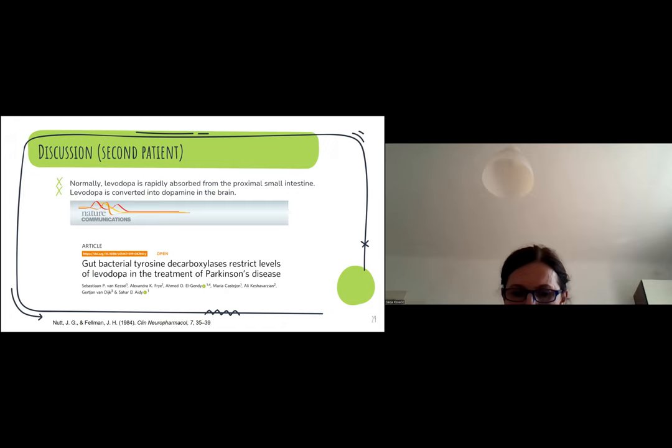Normally, levodopa is rapidly absorbed from the proximal small intestine and converted into dopamine in the brain. In a study published in 2019 in Nature Communications, scientists from the University of Groningen showed in an animal model that gut bacteria can metabolize levodopa into dopamine. Bacterial tyrosine decarboxylases efficiently convert levodopa to dopamine, even in the presence of tyrosine, a competitive substrate. And since dopamine cannot cross the blood-brain barrier, this makes the medication less effective.